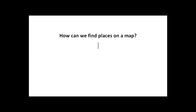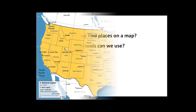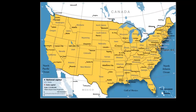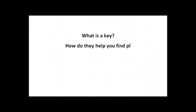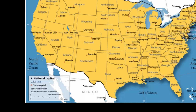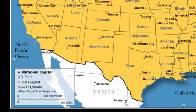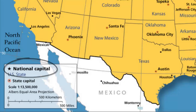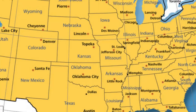So how can we find places on a map? What tools can we use? Look at the symbols on this map of the United States. To know what these symbols mean, we need to study the key. A key is usually printed along the edges of a map, and they tell you exactly what the symbols on the map mean. For example, on this map, the national capital is represented by a star, which is shown here as Washington, D.C.